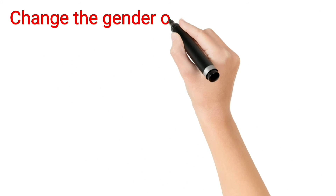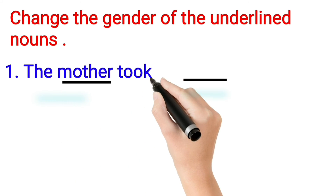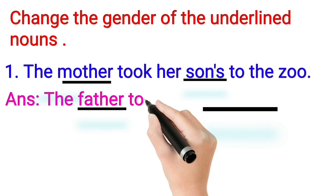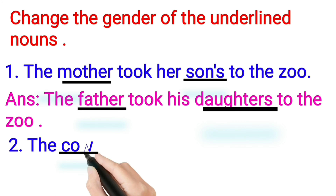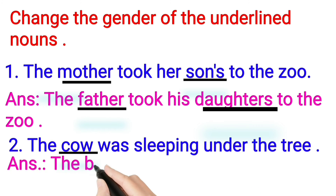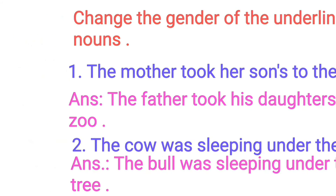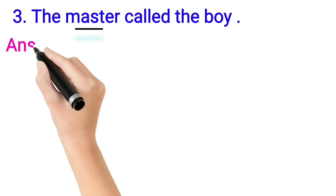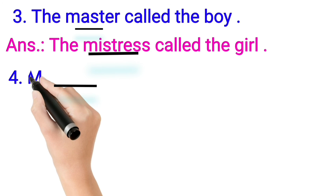Change the gender of the underlined nouns. First: 'The mother took her sons to the zoo.' Answer: 'The father took his daughters to the zoo.' Mother becomes father and sons become daughters. Second: 'The cow was sleeping under the tree.' Answer: 'The bull was sleeping under the tree.' Cow changed into bull. Third: 'The master called the boy.' Answer: 'The mistress called the boy.' Master changed into mistress.